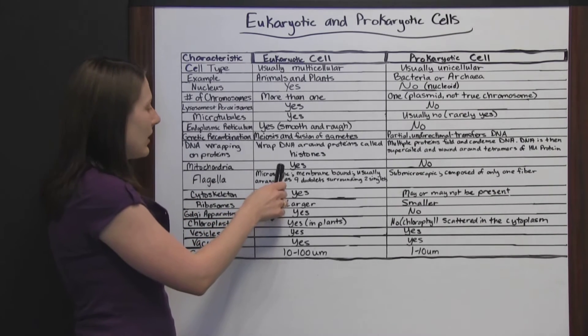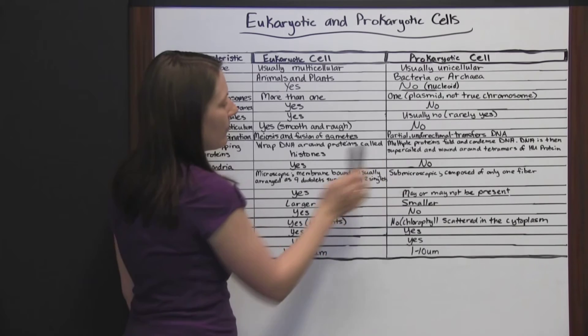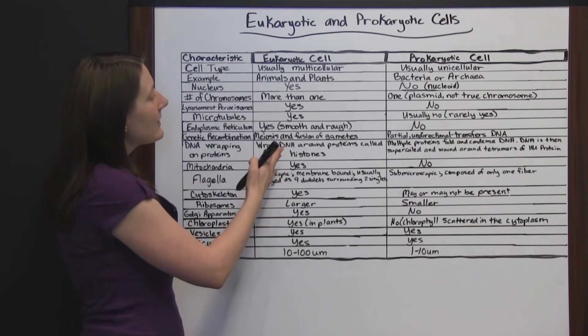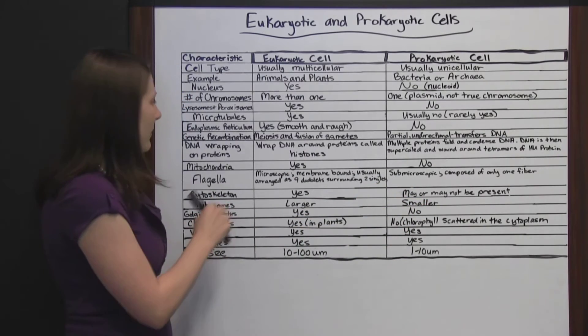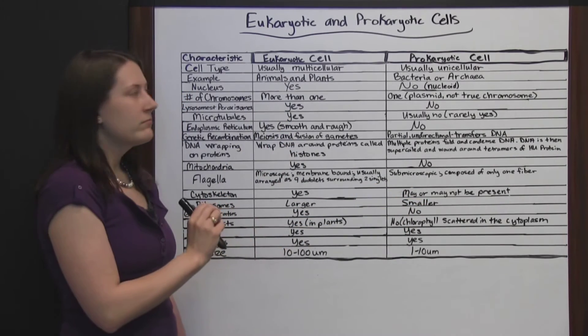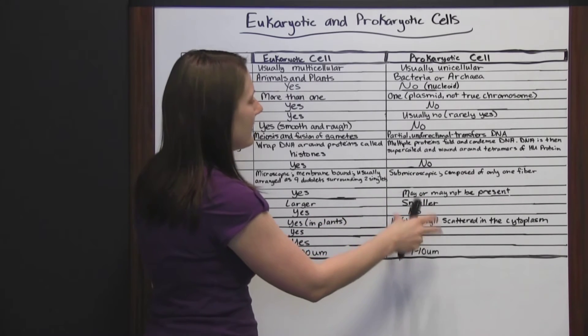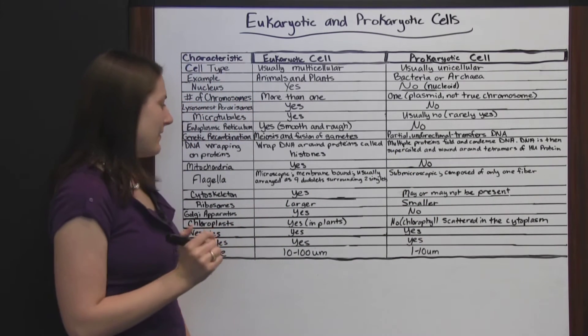Mitochondria. Yes, eukaryotic cells have them. No, prokaryotic cells don't. You can see the eukaryotic cells are going to be a lot more complex than the prokaryotic cells. They do have more things in them and the prokaryotic cells have less inside of them.